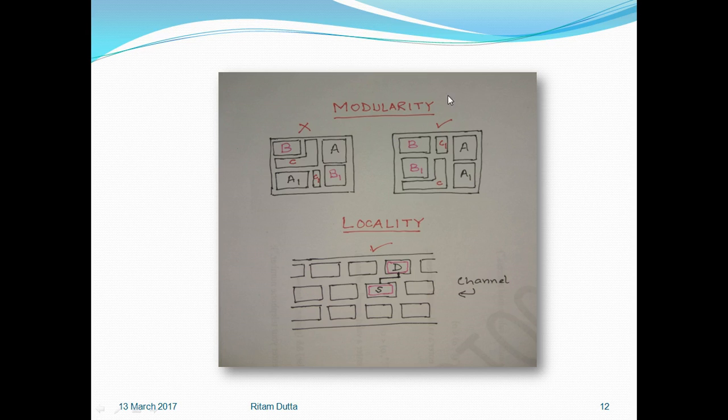On the right side, if A1 is a submodule of A, then A1 can be incorporated in A or put closer to each other so it can be good modularization. We call this a good module factor and good floor planning. Similarly for B and B1, and C and C1.